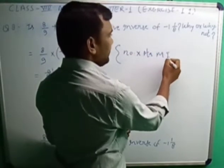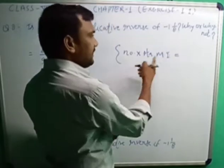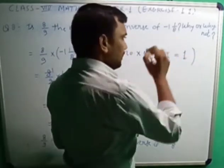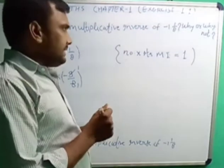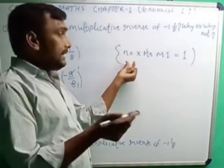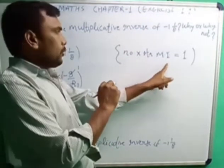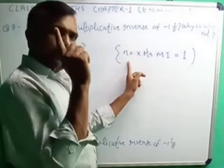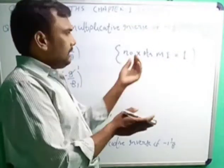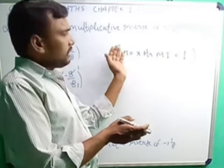Product of these two should be one. It means number and its multiplicative inverse, product of these two values should be one. Then we can say this is the multiplicative inverse of this or this is the multiplicative inverse of this.